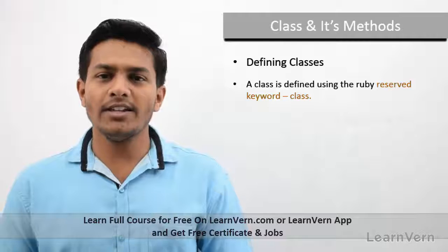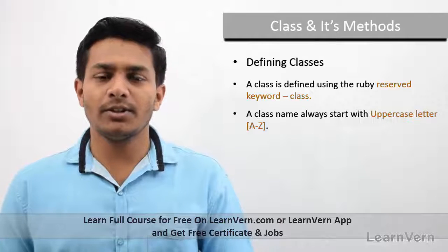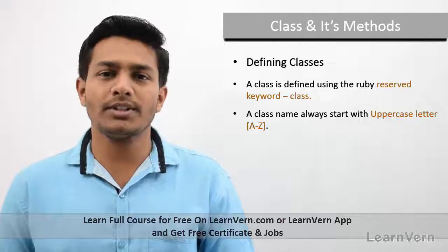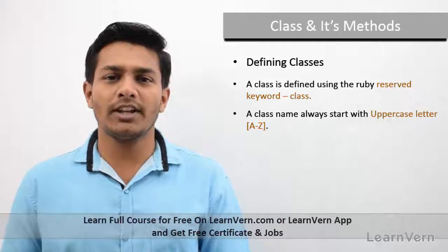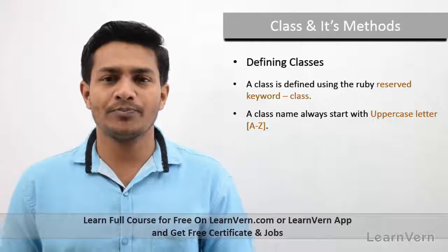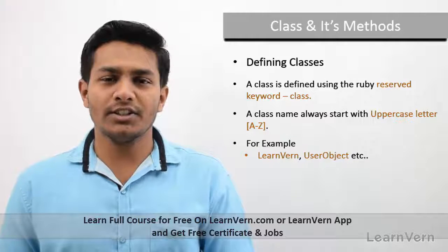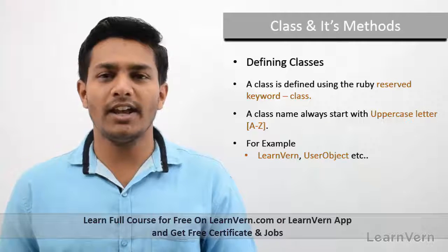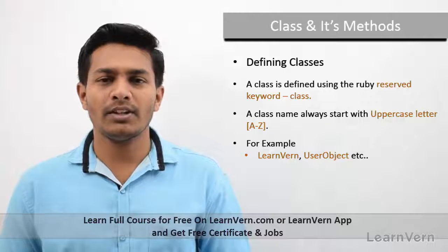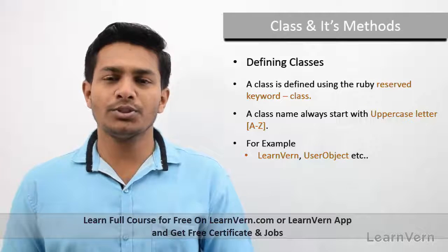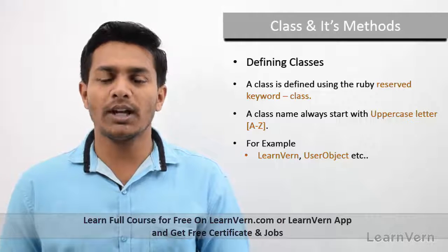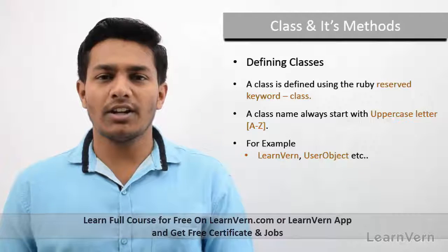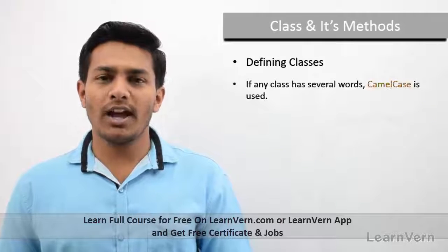In Ruby, a class is defined by the specific keyword 'class'. Any Ruby class name must start with a capital letter — A to Z uppercase. For example, on screen I have created two examples: 'LearnOne' where L is capitalized, and 'UserObject' where U and O are both in capital letters. This is how we create class names in Ruby.